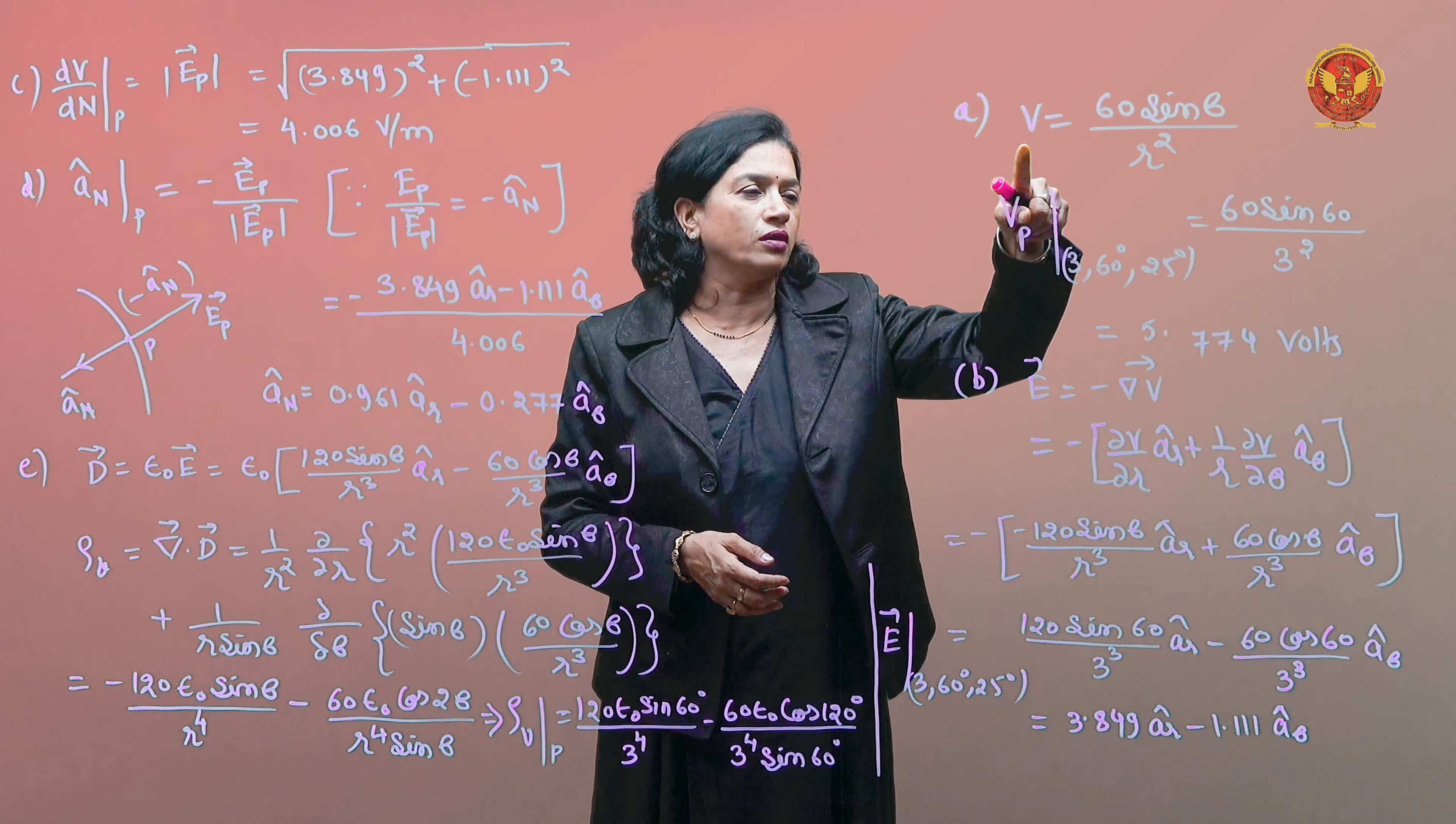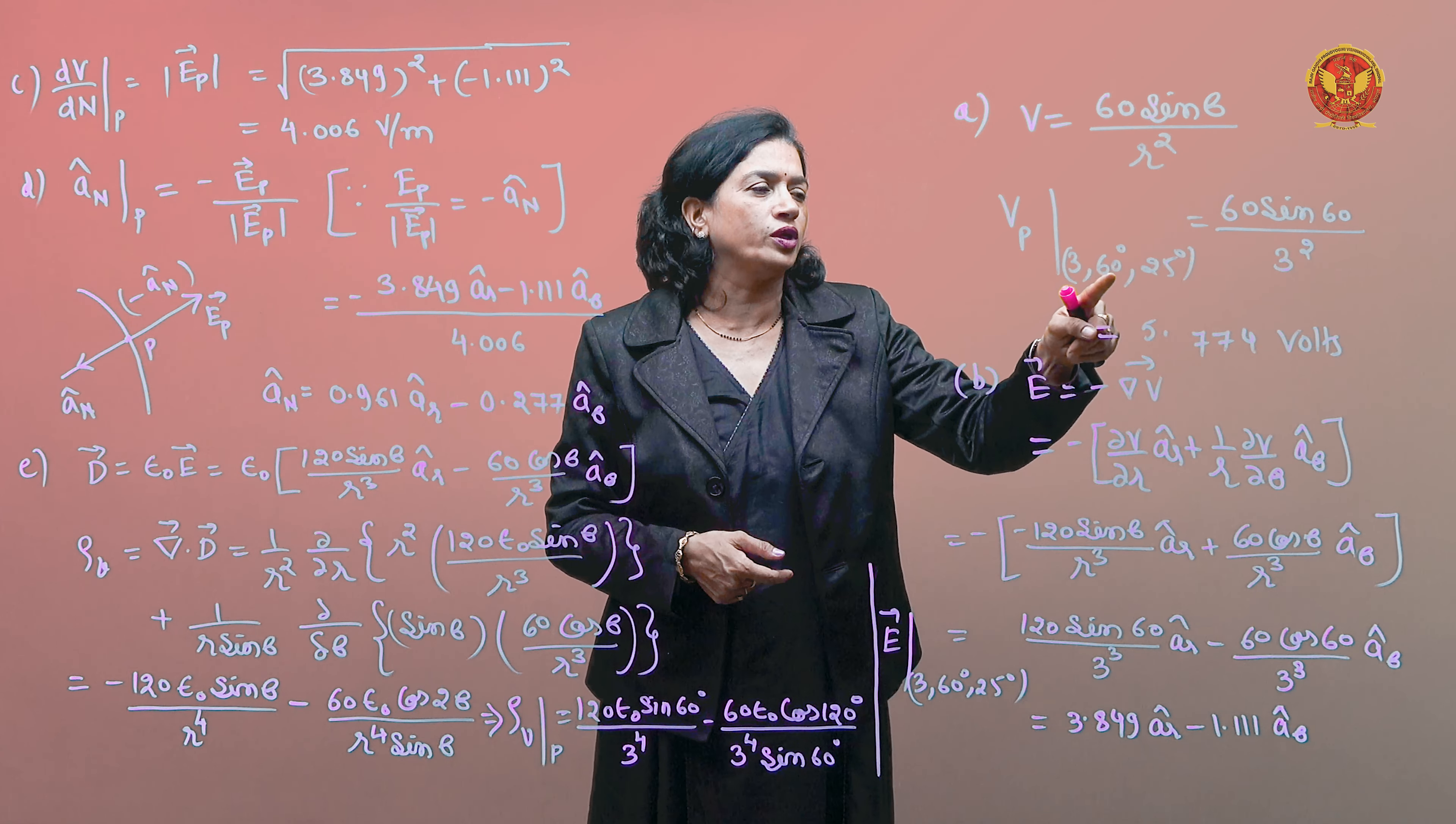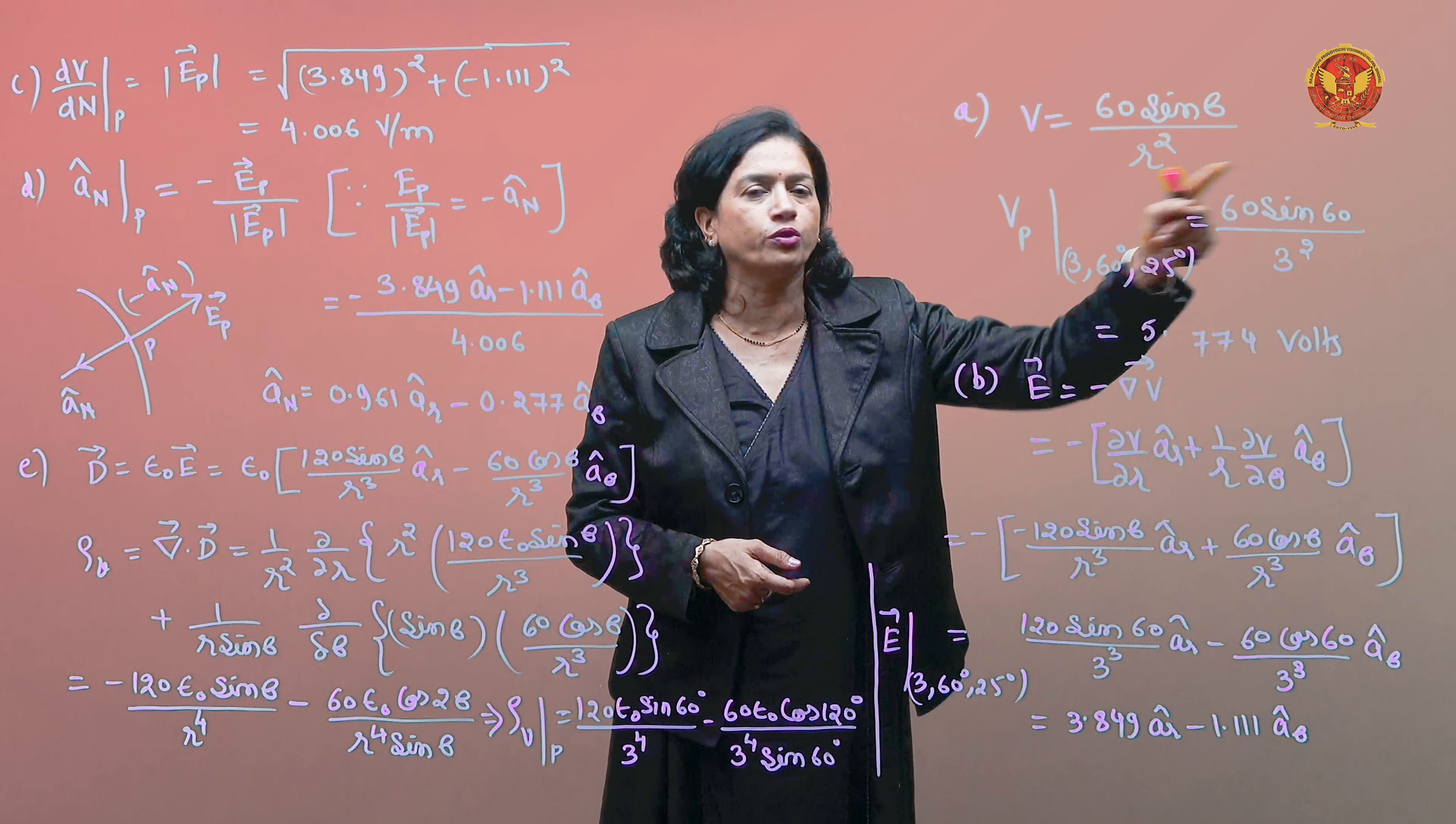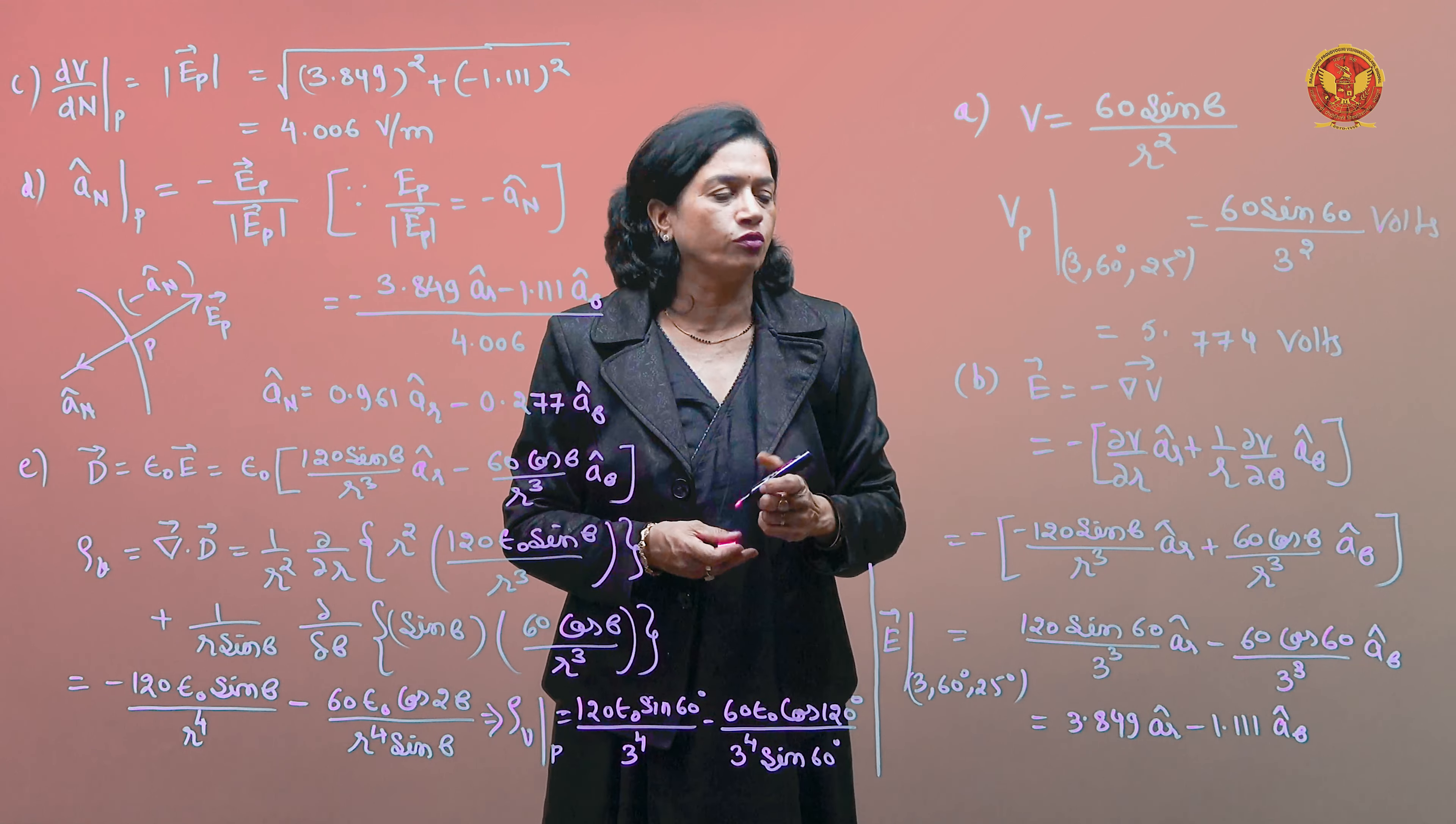In this part, we have to find Vp, the potential at P point. So V's expression is 60 sin theta upon r square. If we find V's value at P point, theta is at 60 degrees and r is at 3. So this will become the potential in volts for P point. Its magnitude is 5.774 volts.